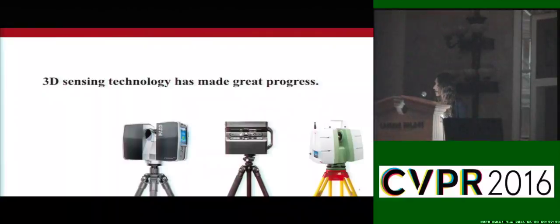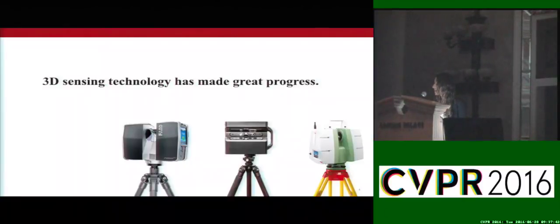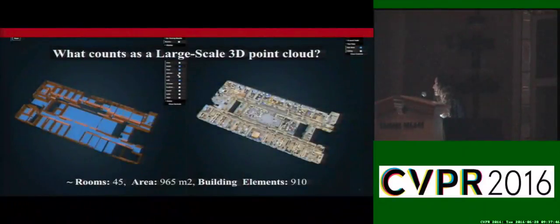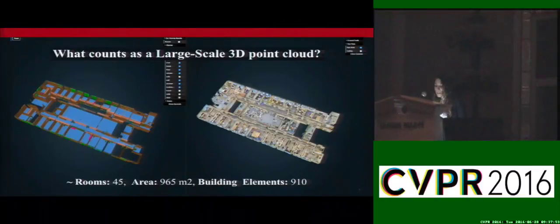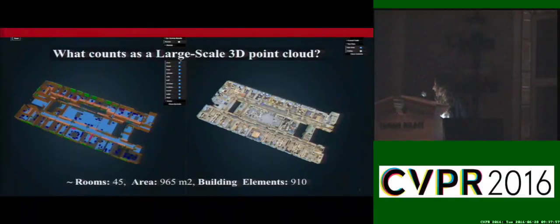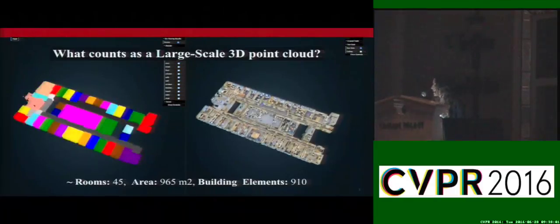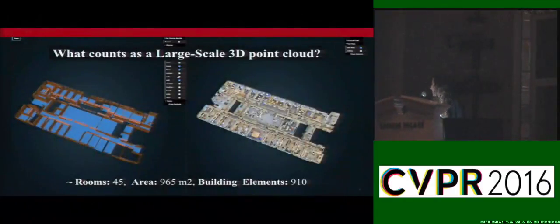3D sensing technology has undergone great development recently and can now provide us with accurate and detailed scans of large-scale spaces. Such scans are essentially the 3D point clouds of the entire space. The goal of this work is to be able to parse point clouds of unprecedented scale into the demanding building elements, such as walls, ceilings, rooms, etc. Let's take for example this point cloud, which corresponds to only part of the floor of the actual building — it has 45 rooms, an area of more than 950 square meters, and more than 900 building elements.